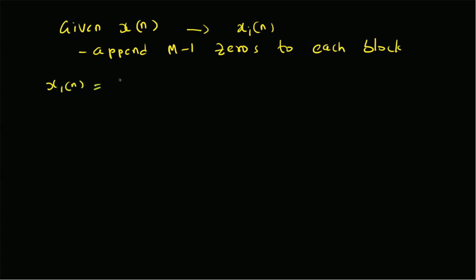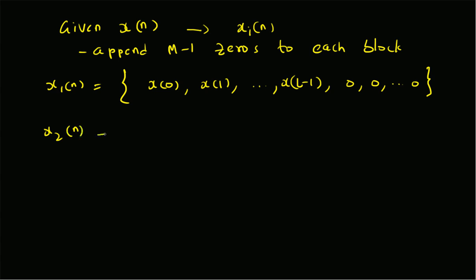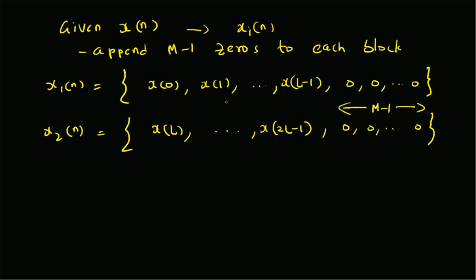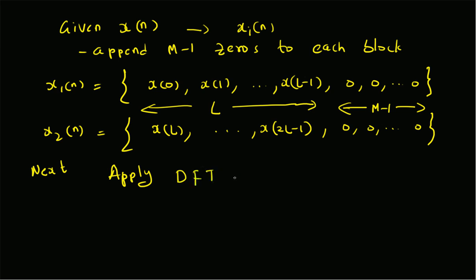Specifically, x1(n) equals x(0), x(1), and so on up to x(L-1), and then M minus one zeros. Similarly, x2(n) will have values from x(L) up to x(2L-1), and then M minus one zeros. The same process continues for the rest of the blocks. The M minus one zeros are appended artificially and the L values are the actual data points. The next step is to apply DFT.